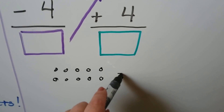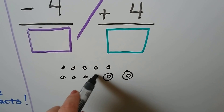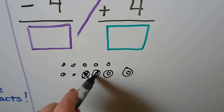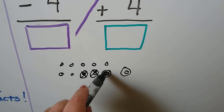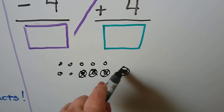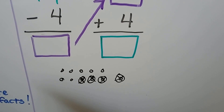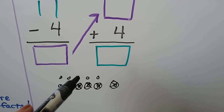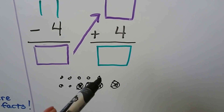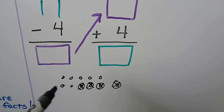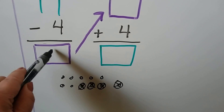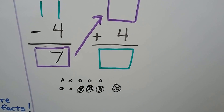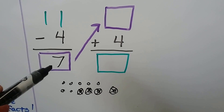We take away one, two, three, four — crossing those out. Counting what's left: one through seven. Eleven minus four is equal to seven.